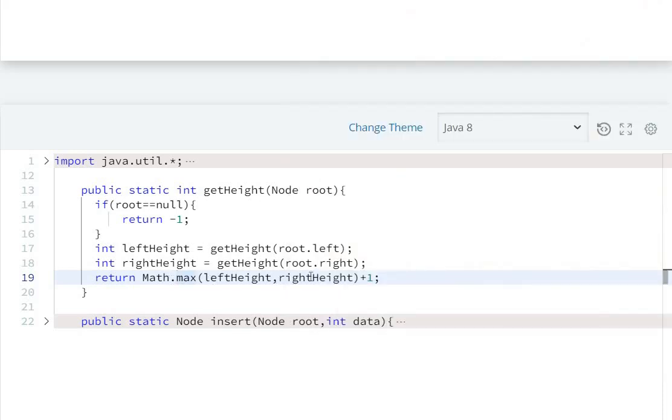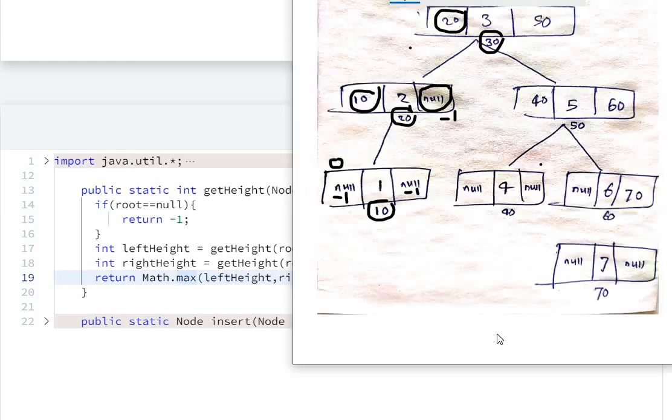Right will return minus one. Maximum of these two, left and right, is zero. So here return Math.max of left and right plus one, so this height will be one.